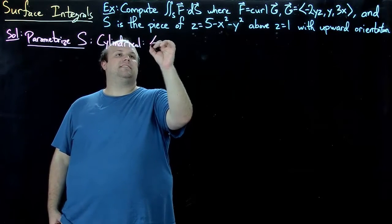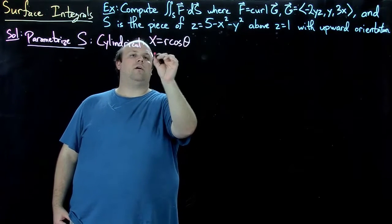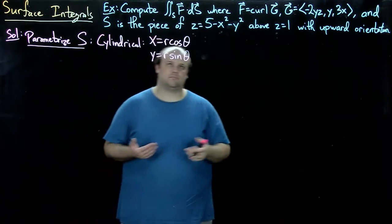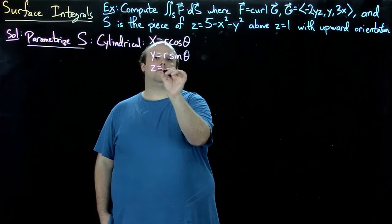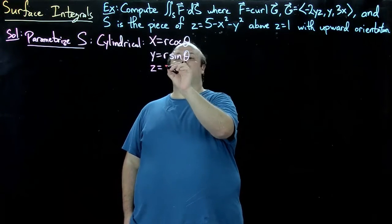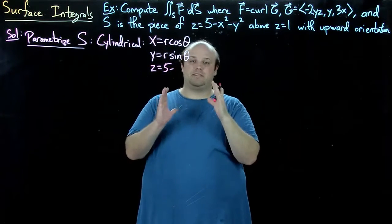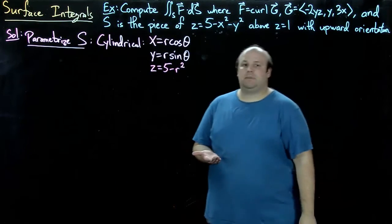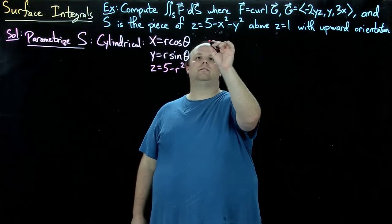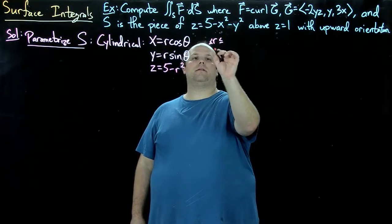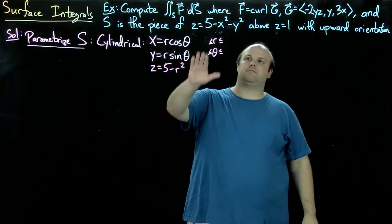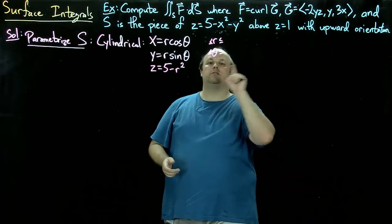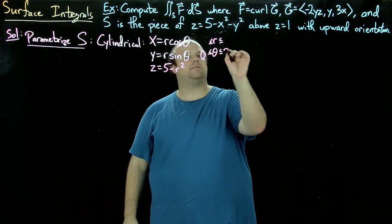Using cylindrical coordinates, x will be r cos θ, y will be r sin θ, and z will be 5 - r². For the bounds on r and theta, this region is bounded by the paraboloid and plane, so we get the full rotation, 0 to 2π.